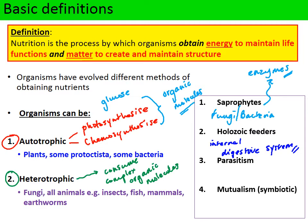Parasitism is another mode of nutrition whereby the organism lives within or on the surface of a host organism. The parasite always obtains nourishment from the host at the expense of the host's health, always causing harm and occasionally even death. A nice example is wasp larvae: a female wasp injects her fertilized eggs inside a caterpillar, which is the larval stage of a butterfly. These eggs develop into larvae that feed off the tissues of the caterpillar — specifically the non-essential tissues, not the delicate internal organs — ultimately causing harm and death to the caterpillar as the host organism.